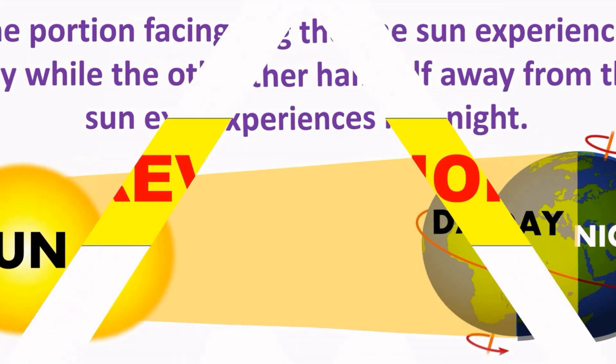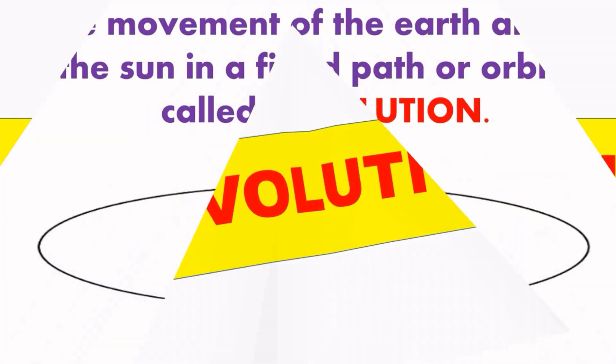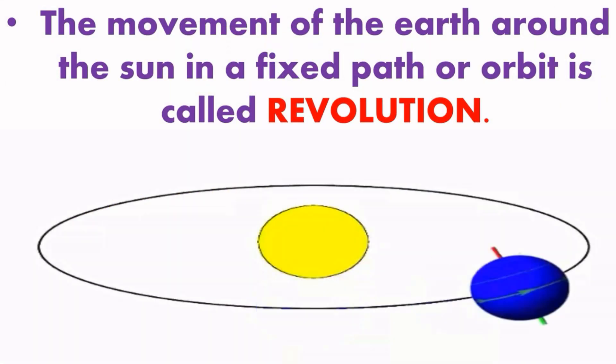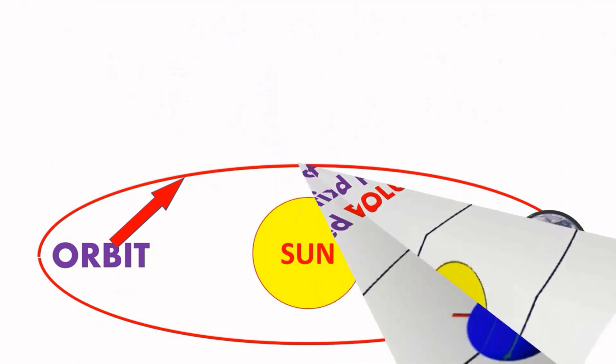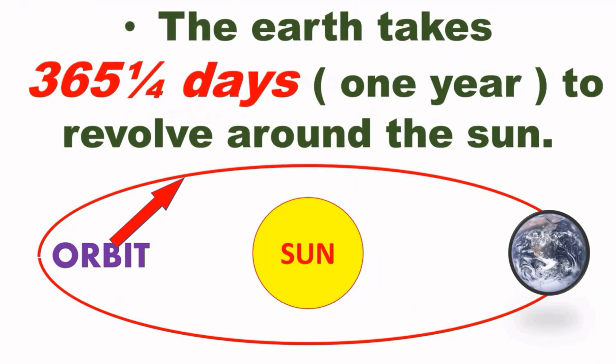Now we will study about the revolution of the earth. The movement of the earth around the sun in a fixed path or orbit is called revolution. Our earth takes 365 days and approximately six hours to revolve around the sun, and this revolution also causes change in season.